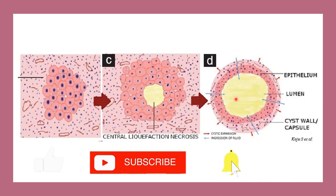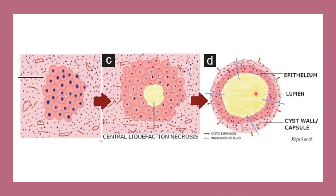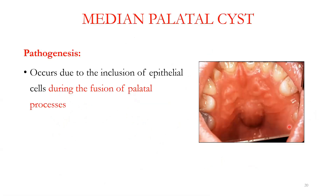That in turn attracts more fluid inside and causes cystic expansion. Now we will move on to non-odontogenic cysts and other developmental cysts. The meaning is that it does not arise from odontogenic epithelium — not from rests of Serre or Malassez, oral epithelium, or enamel organ. This is because of the inclusion of epithelial cells during development, which is why it is a developmental cyst but is called a non-odontogenic cyst.